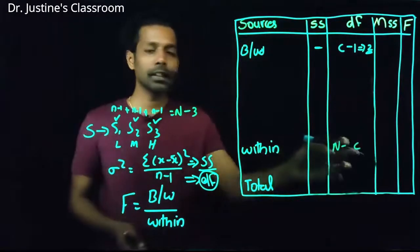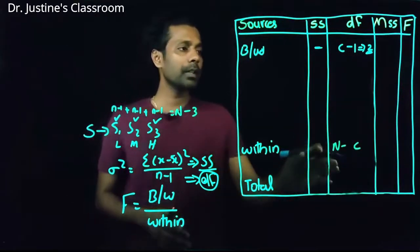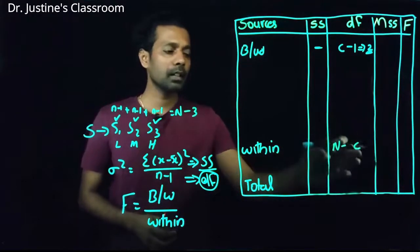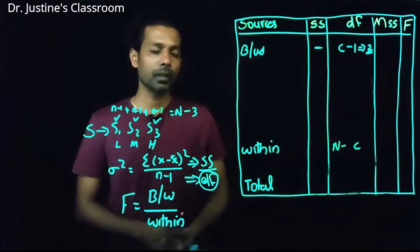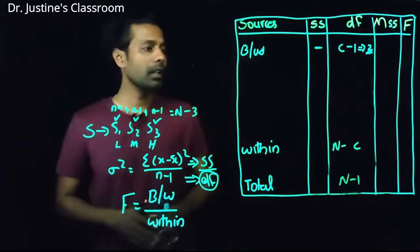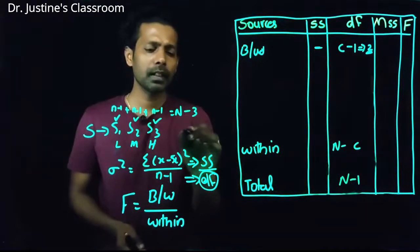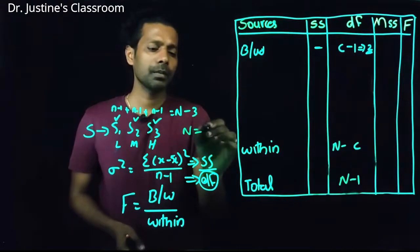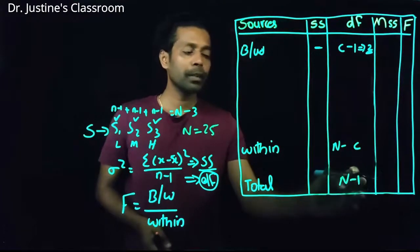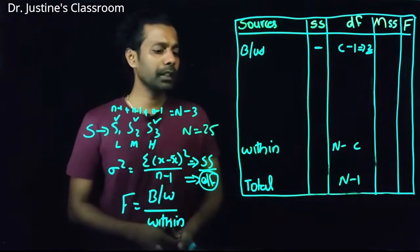The within-group degree of freedom equation is N minus C, where C is the number of groups. Total degree of freedom is always N minus 1. For example, if total sample size N is 25 and C is 3, then within-group df = 25 minus 3 = 22, and total df = 24. This is how we calculate degrees of freedom for between, within, and total in one-way ANOVA.